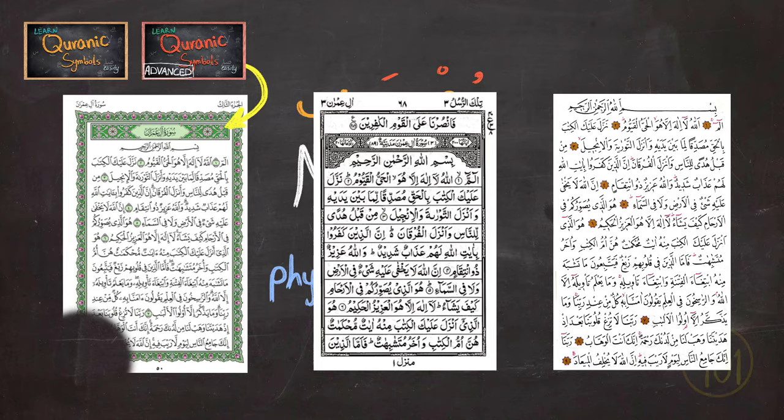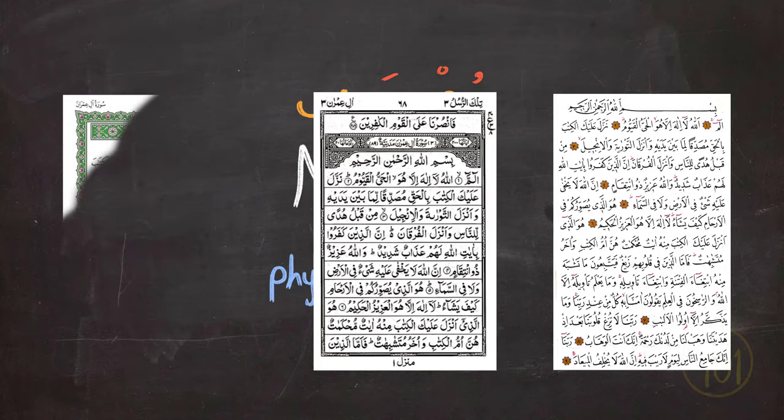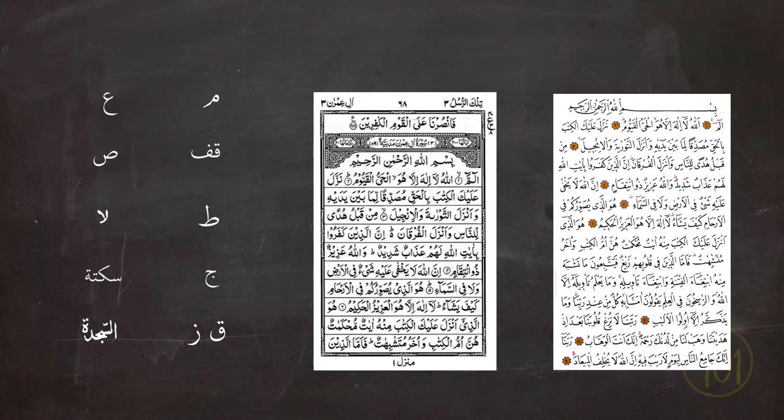Because of the similarities between the Uthmani Mus'haf and all other publications, these are the symbols found mainly in Turkish and Urdu Mus'haf. And that's what they mean.